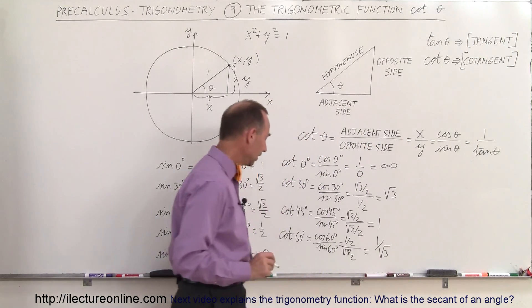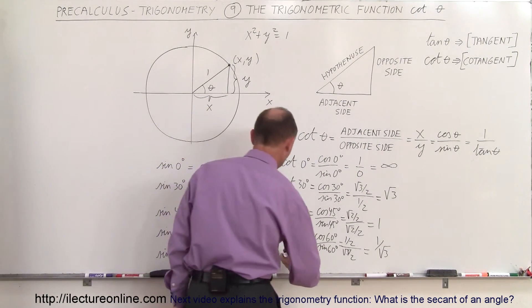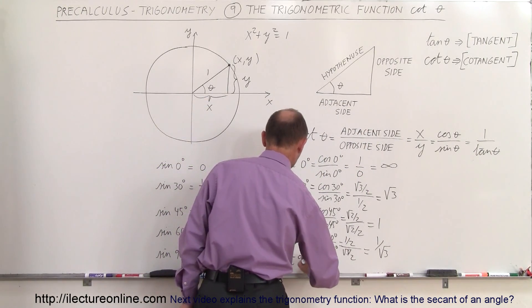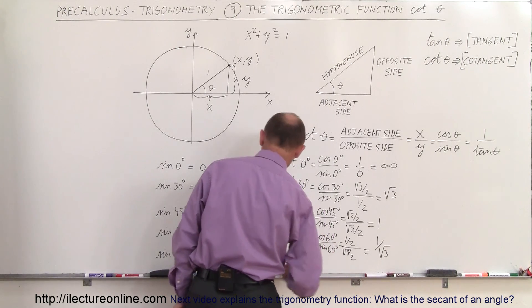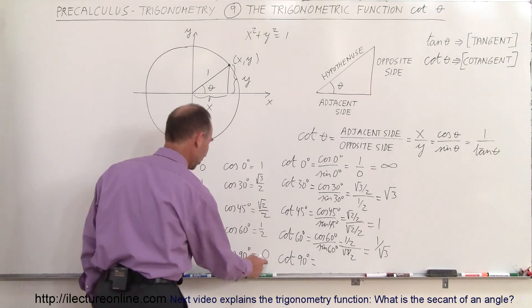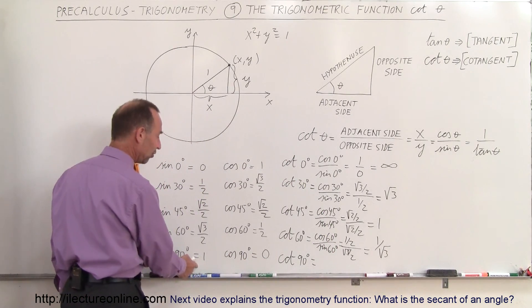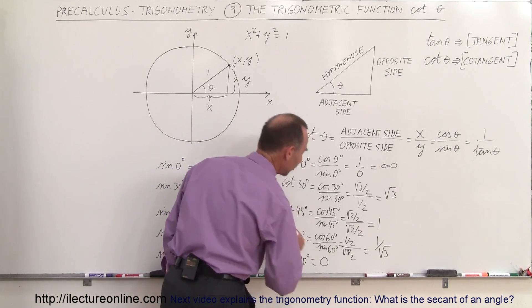Finally, the cotangent of 90 degrees is equal to the cosine of 90, which is 0, divided by the sine of 90, which is 1, so that's simply 0.